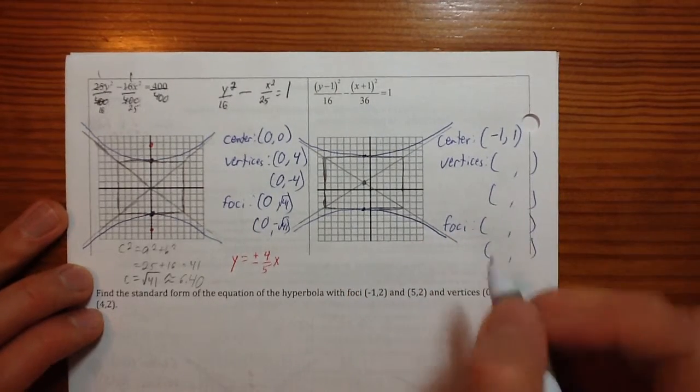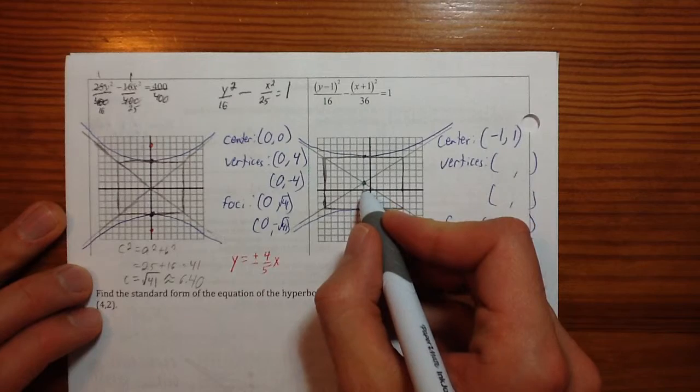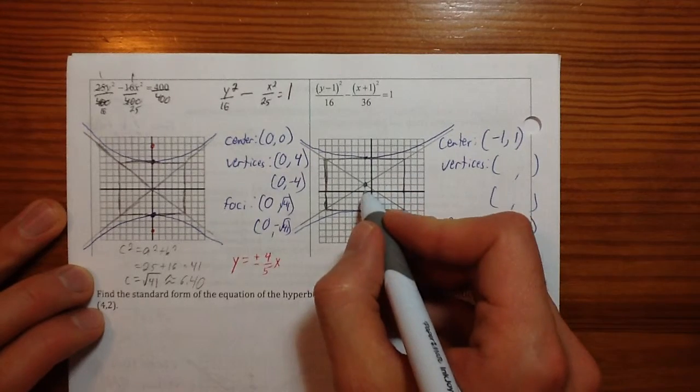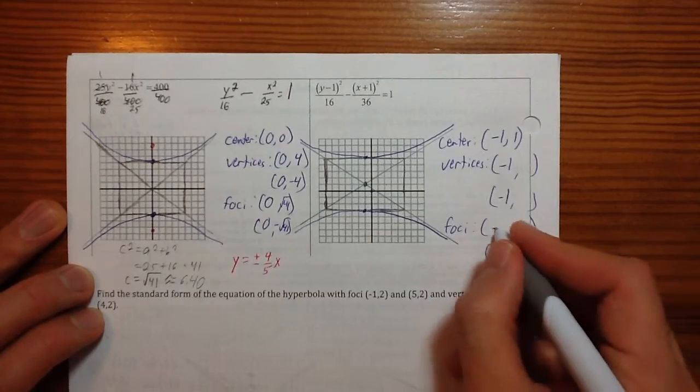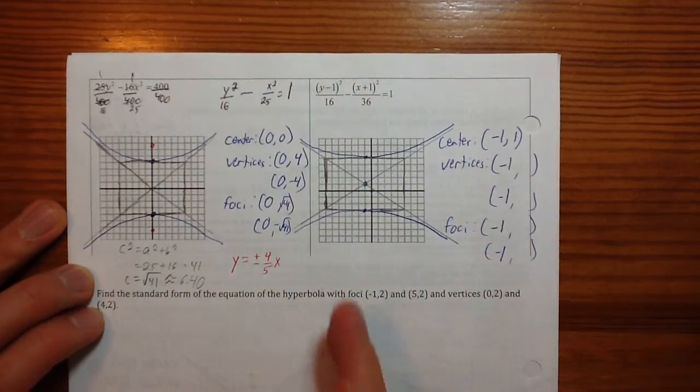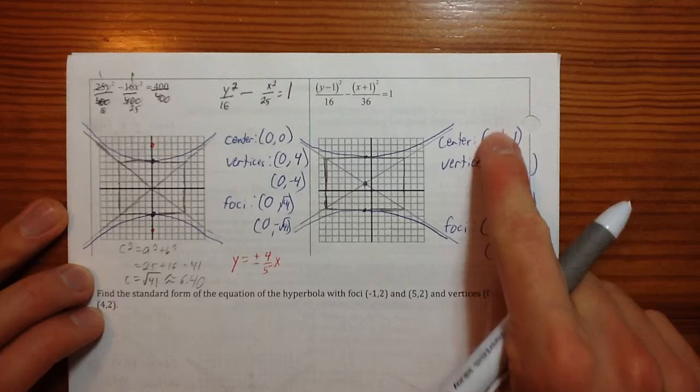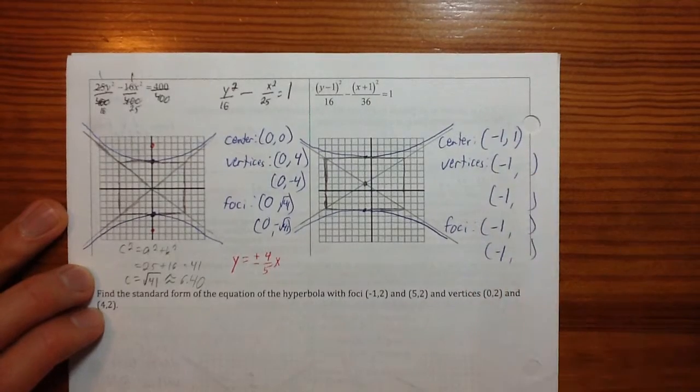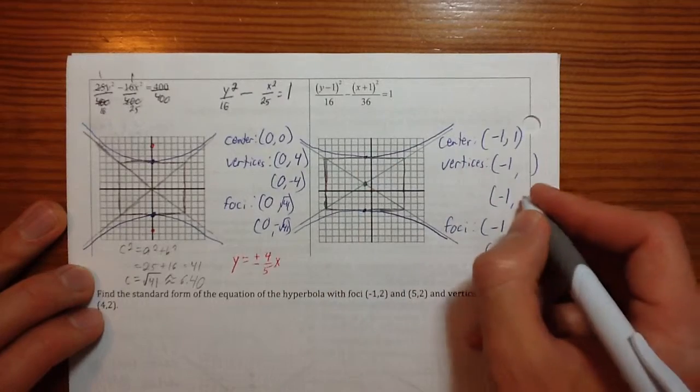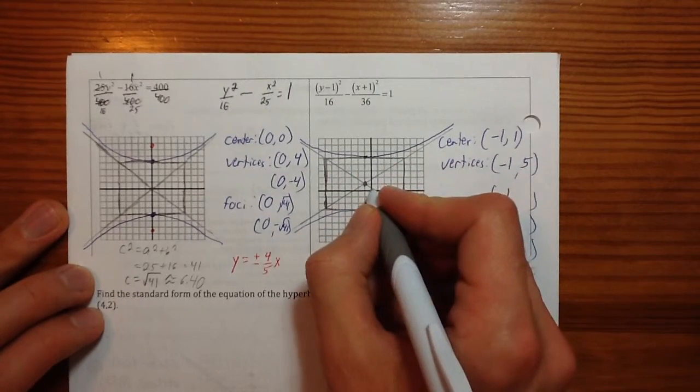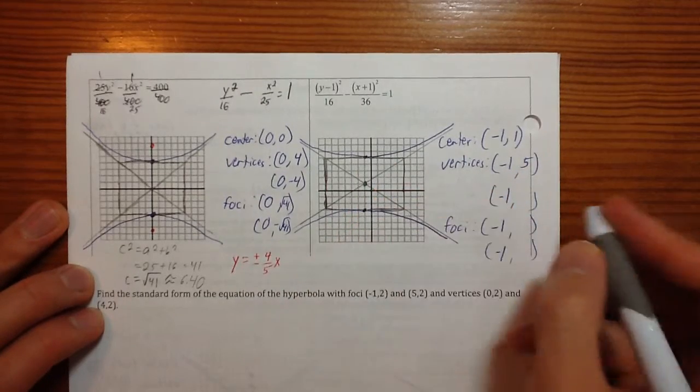Where are the vertices? Well, the vertices are at (-1, something) and (-1, something else). That component is going to be the same for all of them because it's a vertical issue. So the x won't change. The y will. So (-1, 1, 2, 3, 4, 5). Negative 1, 5. And (-1, 1, 2, 3). Negative 3.